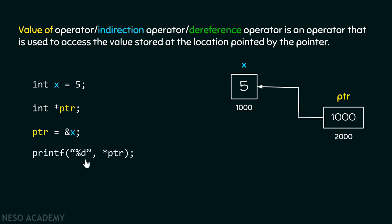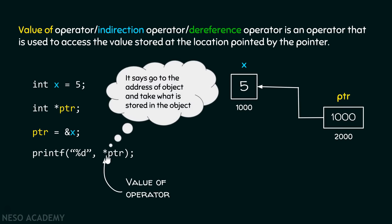Now, with the help of this printf function, I am trying to print the value 5 on the screen using the star operator, which is also called the value of operator. It will take whatever is stored in the object — in this case, the object is variable x, which contains value 5. Therefore, with the help of the star operator, I can retrieve this value and print it on the screen. The output is 5.